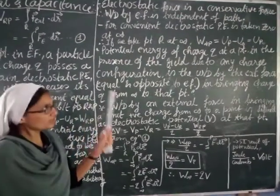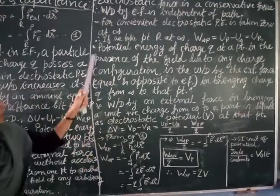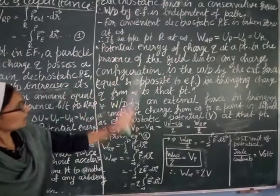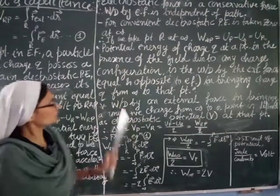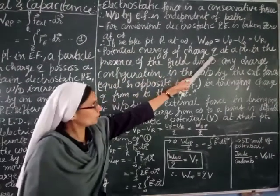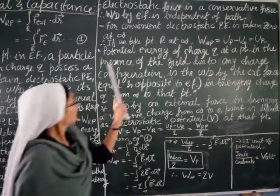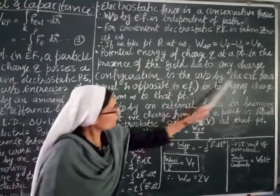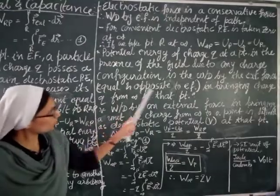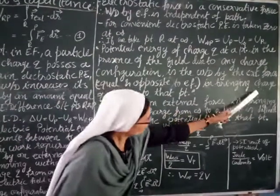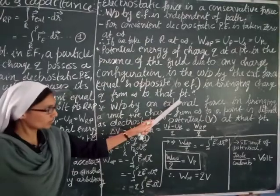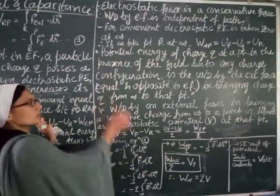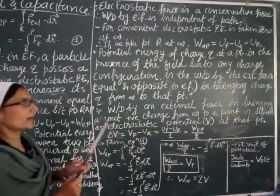With infinity as the reference point, we are going to define what we mean by potential energy. The potential energy of a charge Q at a point in the field due to any charge configuration is the work done by an external force — equal and opposite to the electric field — in bringing charge Q from infinity to that point.